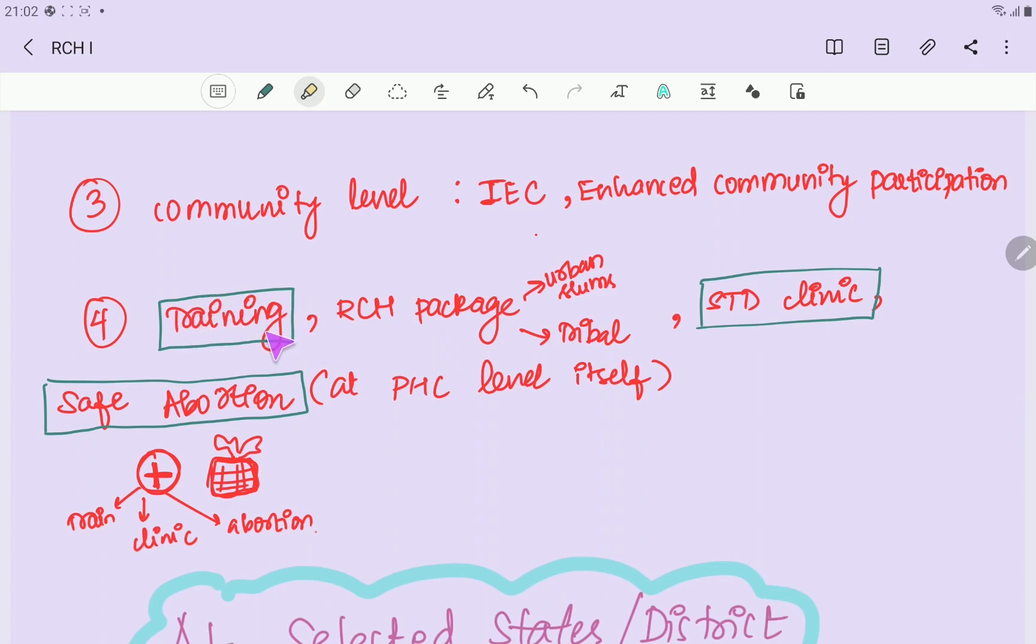Next is high-quality training at all levels - PHC, sub-center, etc. RCH package in urban slums, tribal areas, special importance. It's not just child and motherhood survival package. Then you get STD clinic, safe abortion practices even at PHC level itself. These are the whole interventions you have to write.